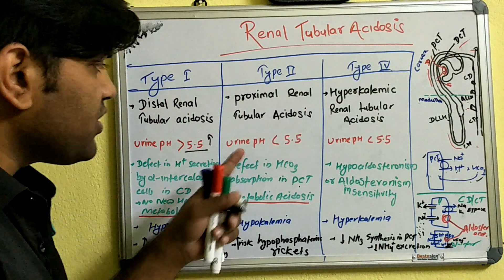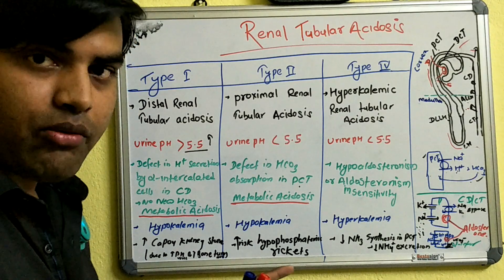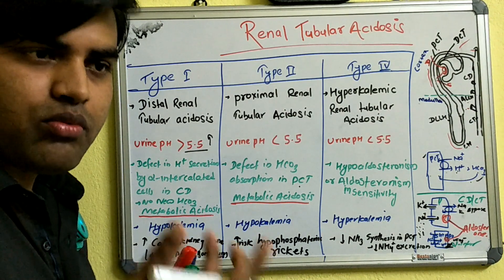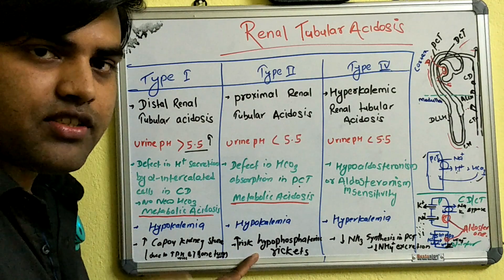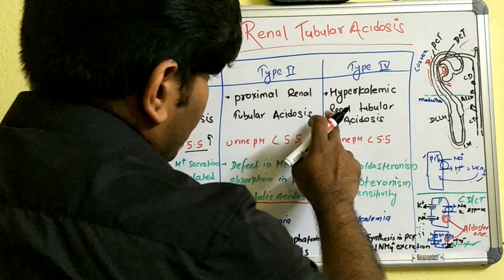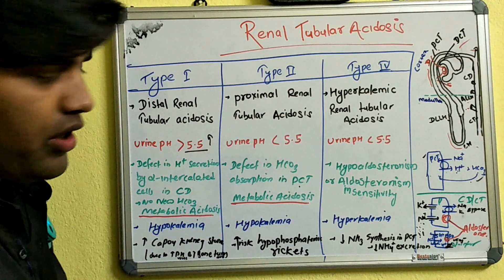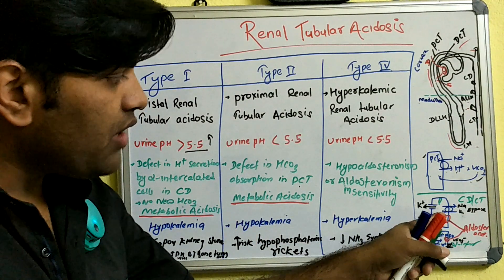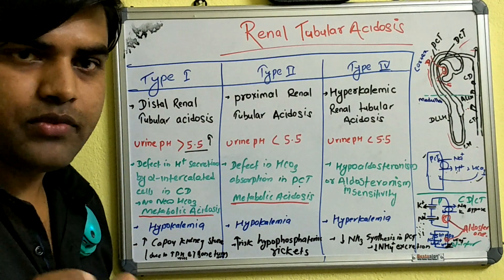In Type 2 RTA, the proximal tubule cannot absorb anything properly, so there will also be hypophosphatemia because phosphate is normally absorbed in the proximal convoluted tubule. Patients commonly present with Fanconi syndrome — where the proximal convoluted tubule is unable to absorb glucose, amino acids, phosphate, or bicarbonate. The causes of proximal RTA include Fanconi syndrome, multiple myeloma, and carbonic anhydrase inhibitor drugs such as acetazolamide. Patients with Fanconi syndrome have an increased risk of hypophosphatemic rickets.